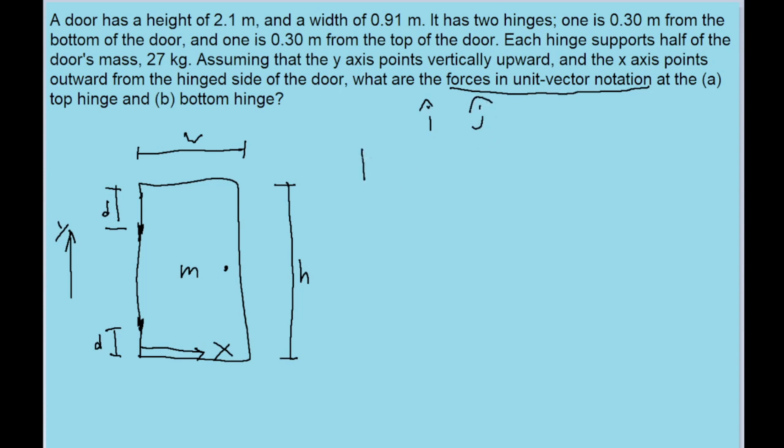I'll start with the y-direction, since that'll probably be the easiest. In fact, the problem gives us so much information that we don't even really need to have a free body diagram to figure out this part, because the problem explicitly tells us that each hinge supports half of the door's mass. Now, of course, I'm still going to draw a free body diagram anyways.